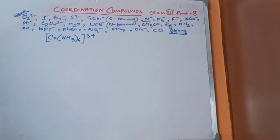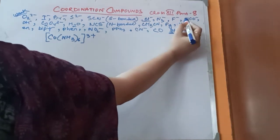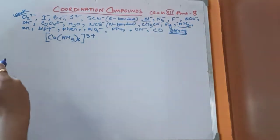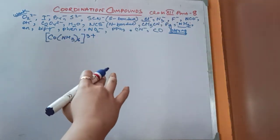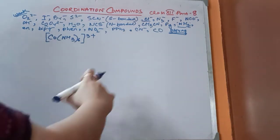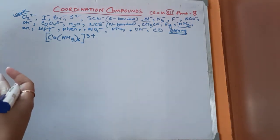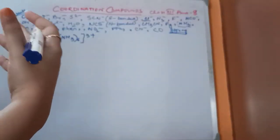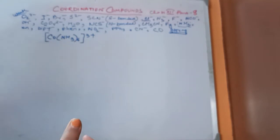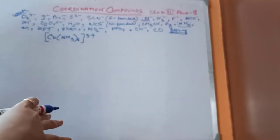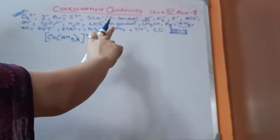Look at the position of ammonia in the spectrochemical series. Ammonia is a moderate field ligand — neither too weak nor too strong — but it is biased towards the stronger field ligand side. The complexes of ammonia are not always spin-paired; sometimes they can be spin-paired and sometimes they cannot, depending on other factors. In this complex, ammonia will act as a strong field ligand.